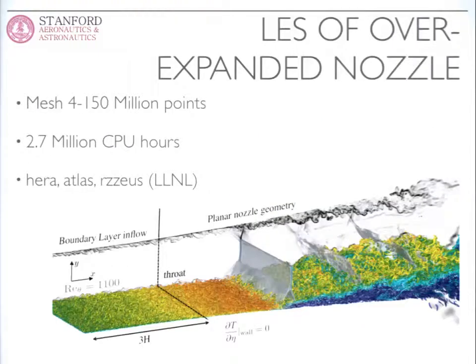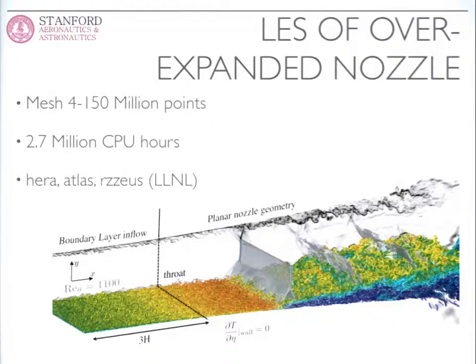This is the suite of problems that we ran — a number of different LES simulations with mesh sizes ranging from 4 million all the way up to 150 million grid points. We burned through about 2.7 million CPU hours and ran on three different machines at Livermore: HERA, ATLAS, and RZ-SEUS. Here's a snapshot of the flow field: we have a section introducing turbulence, with turbulent structures near the wall being conducted downstream as the nozzle expands, passing through a shock wave, which destabilizes the boundary layer, separating it off the wall and introducing larger scales of motion.